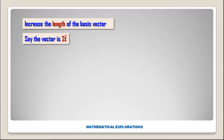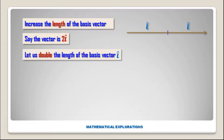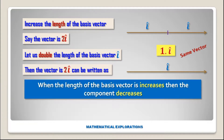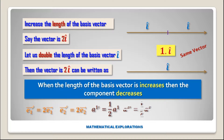The vector 2i has 2 components. Now let us double the length of the basis vector i. Then the vector 2i can be written as 1 times i-prime, but the vector remains the same. This means when we increase the length of the basis vector, the value of the component decreases. So we write E1-prime equals 2·E1, E2-prime equals 2·E2, and A¹-prime equals half of A¹, A²-prime equals half of A².